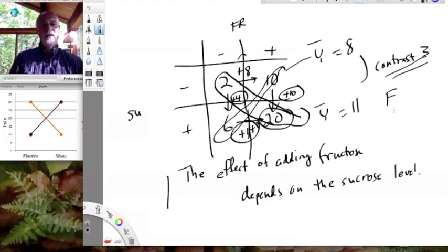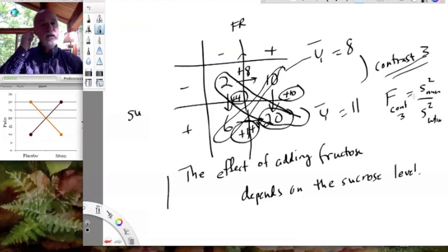So just like our other contrasts, we can construct an F-test for contrast 3, which will permit us to determine whether the numerator variance, right, which contains variation due to differences among means, is elevated significantly above the within-group variance such that we can conclude an F-value that high would not be obtained by chance more often than our alpha, whatever it happens to be, okay?